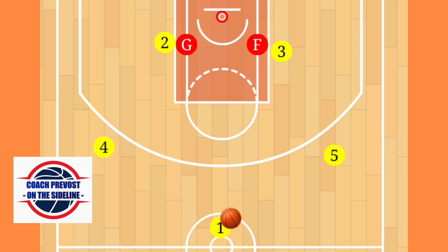Players misdirecting the defense and allowing the bigs to establish post position. Your offense will start in a 3-2 set with the 4 and 5 on the wings and your 2 and your 3 down on the block. Your point guard, your 1, will start with the ball at the top of the arc.